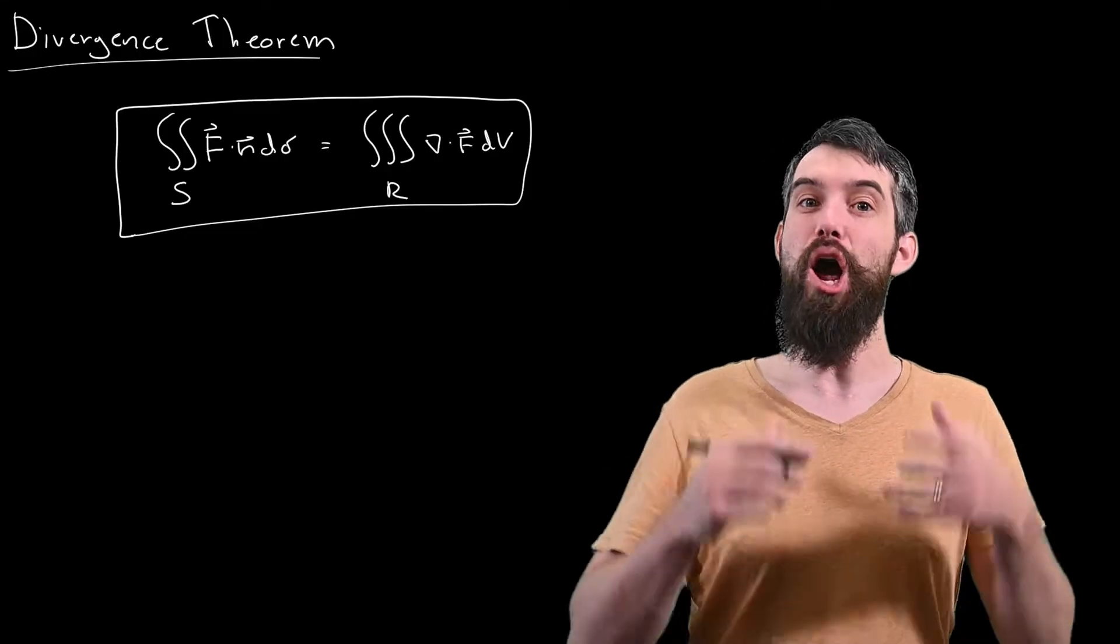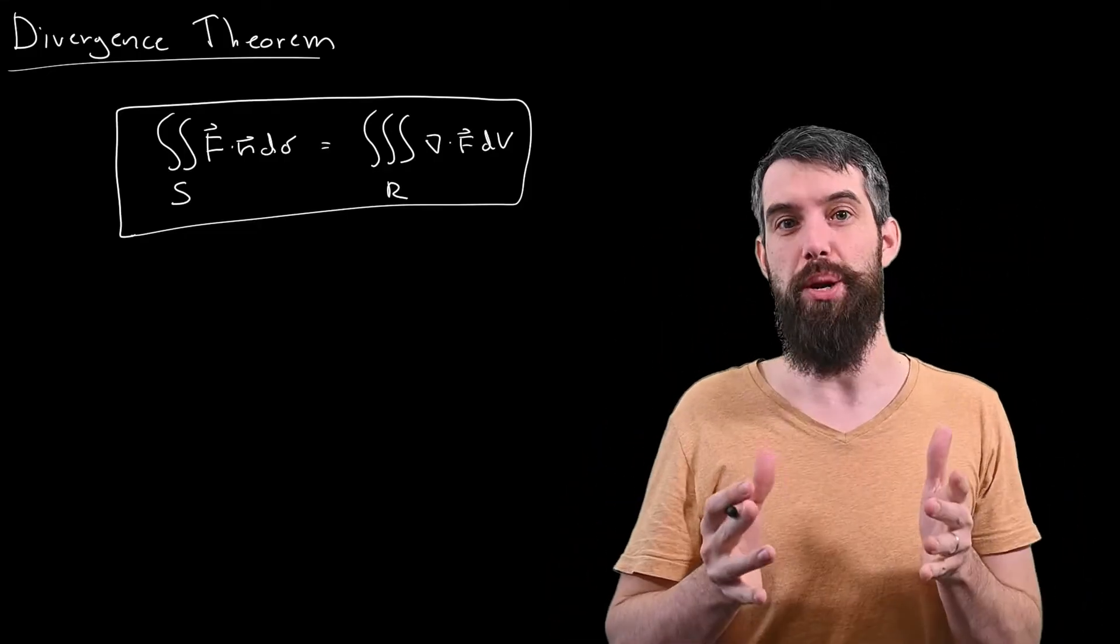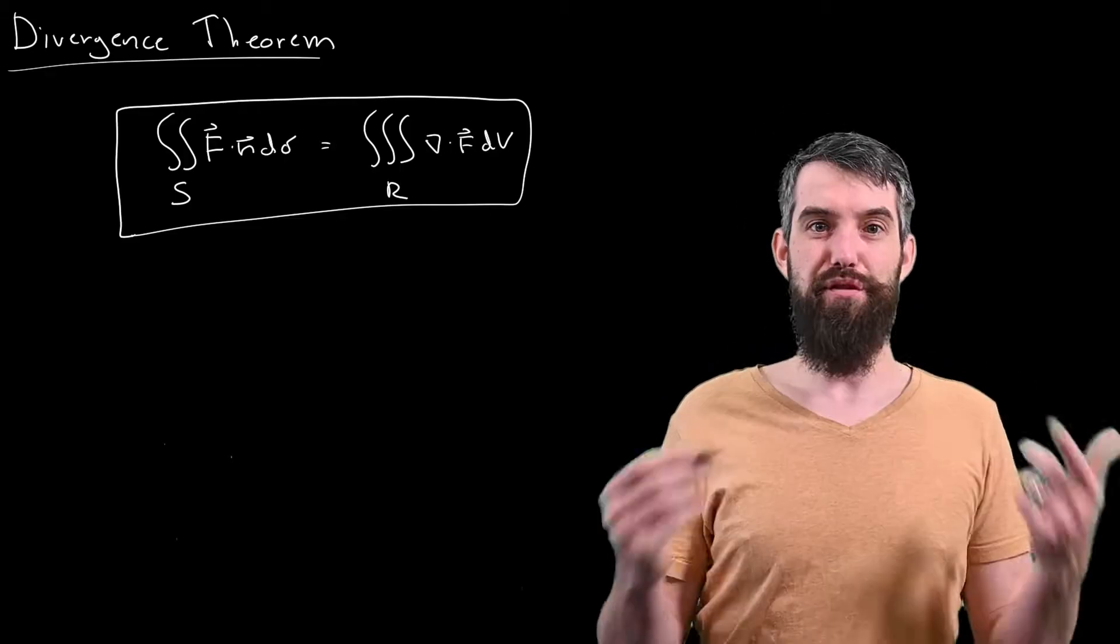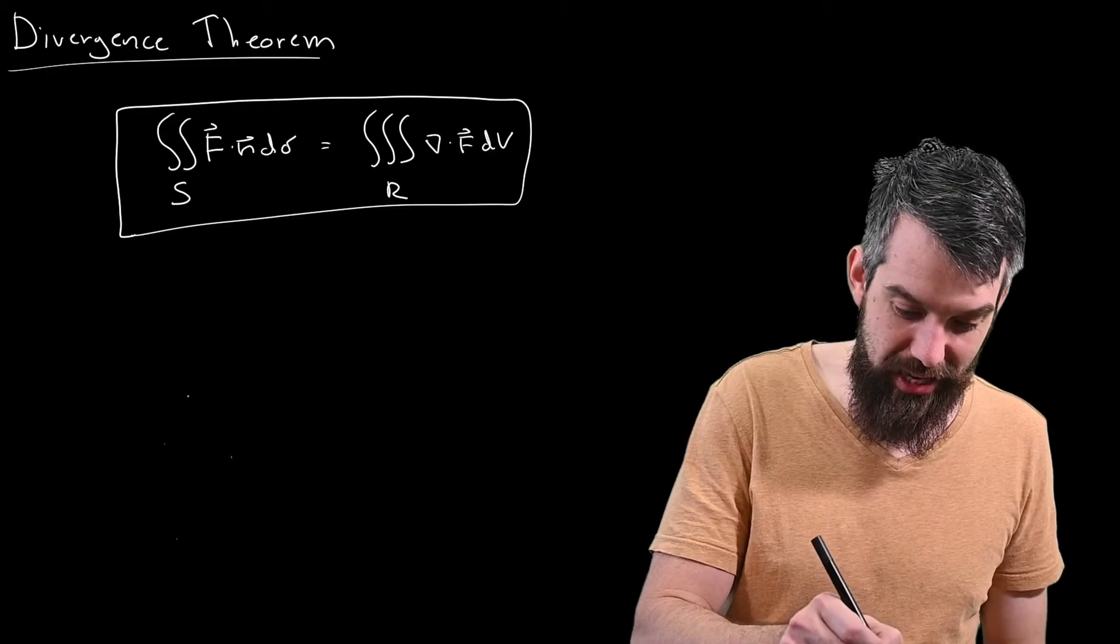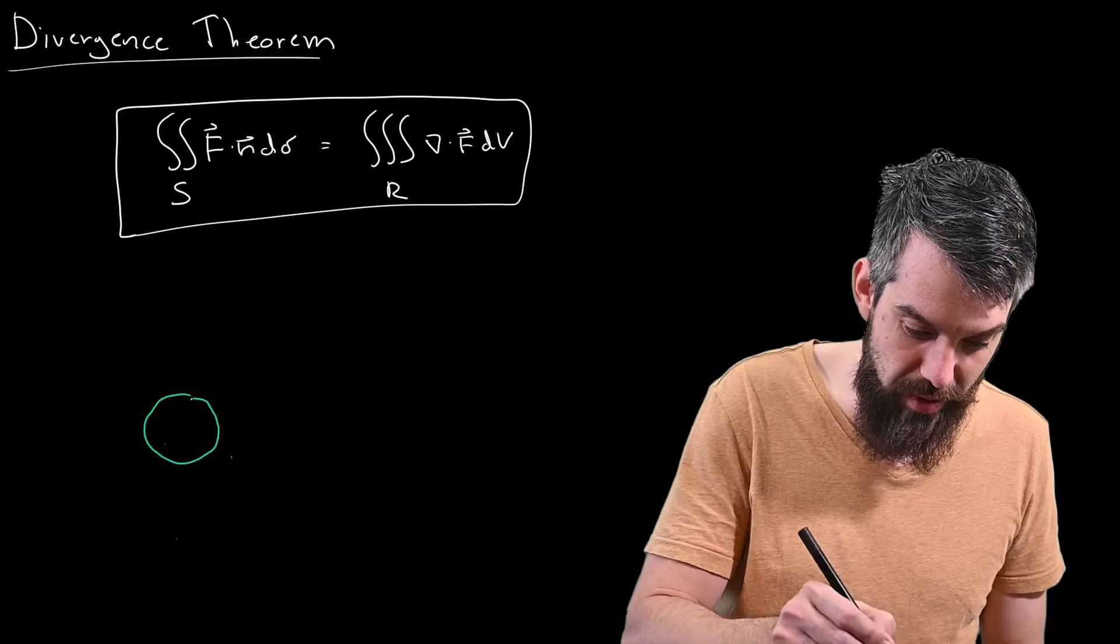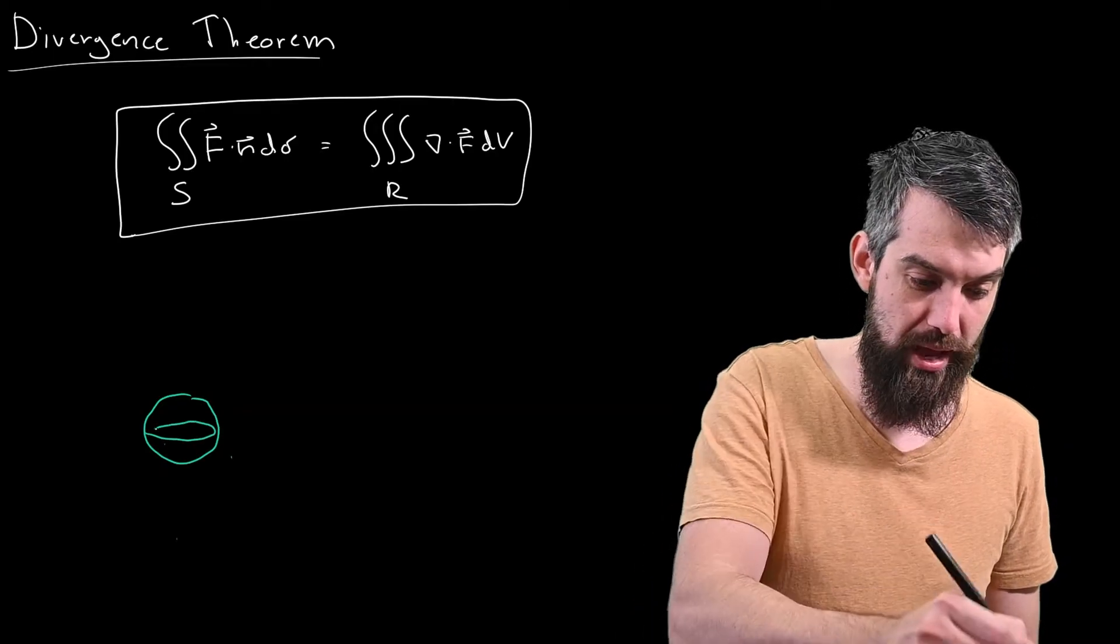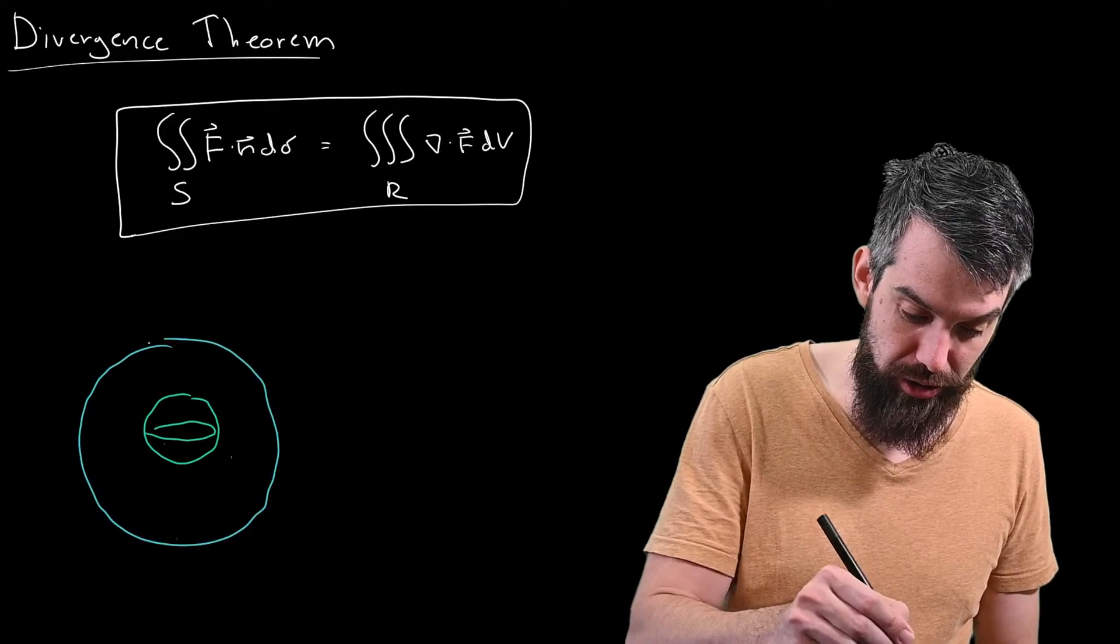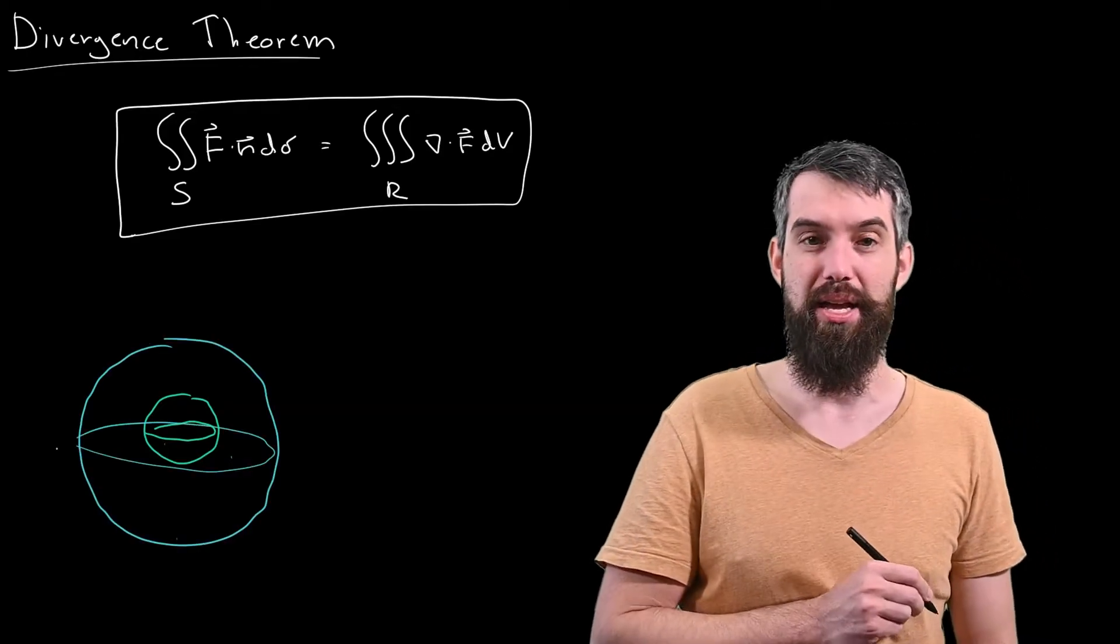What I want to begin with is imagining a region, a three-dimensional region that has an inside surface and an outside surface. For example, imagine a region that has an inside, which is going to be a small sphere, and has an outside, a much larger sphere, something like this.